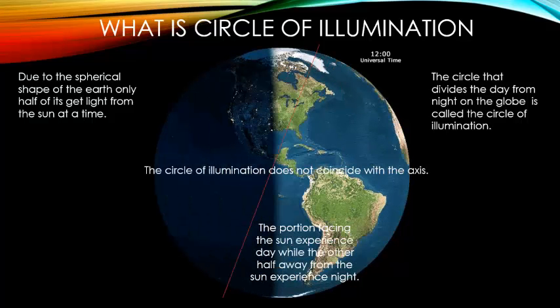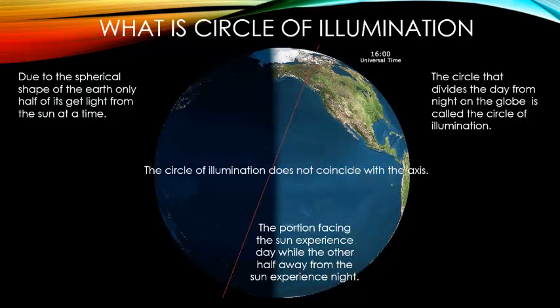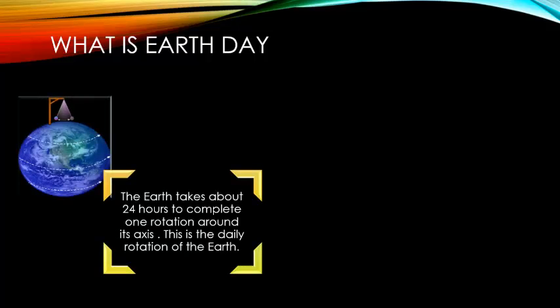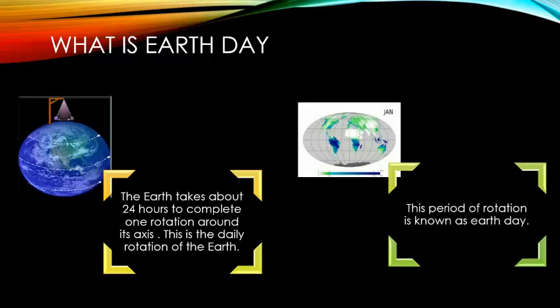The circle of illumination does not coincide with the axis. What is earth day? The earth takes about 24 hours to complete one rotation around its axis. This is the daily rotation of the earth. This period of rotation is known as the earth day.